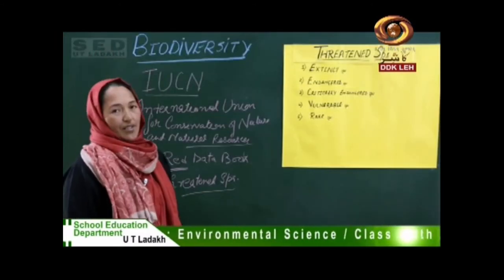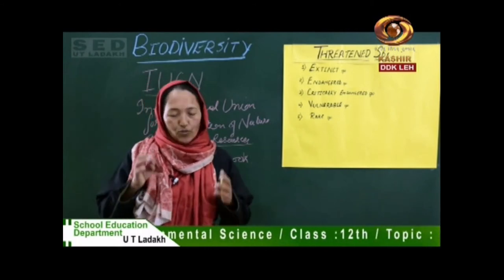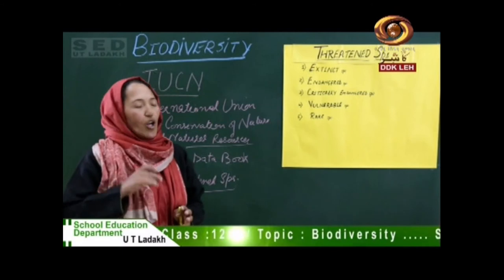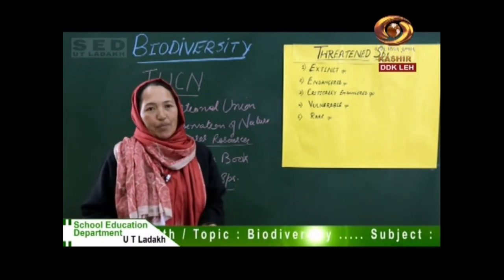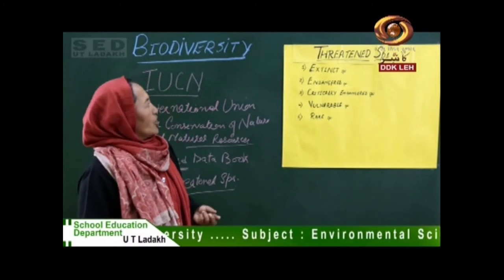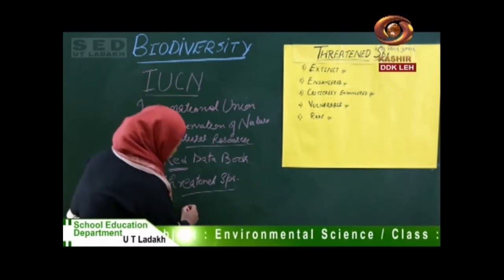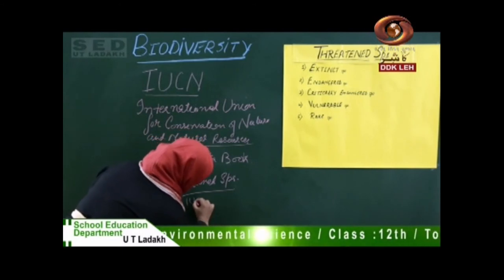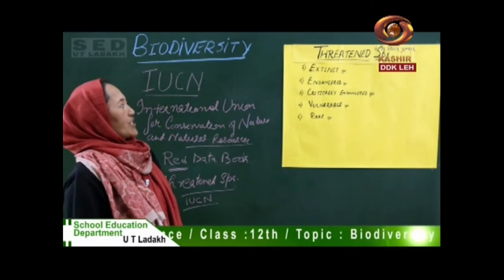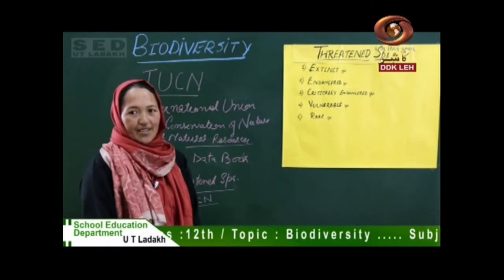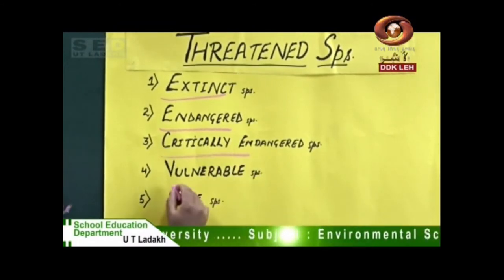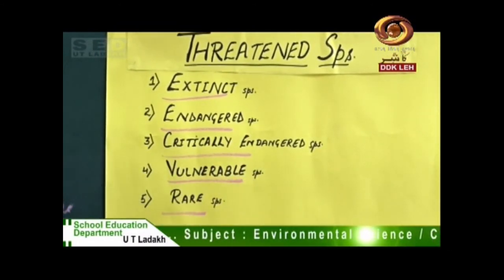What are threatened species? Threatened species are those species which, if not conserved or preserved, may in the future become rare, critically endangered, or may go extinct. IUCN has categorized threatened species into five broad ways: extinct, endangered, critically endangered, vulnerable, and rare.